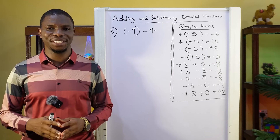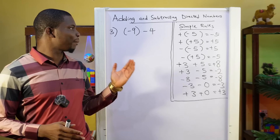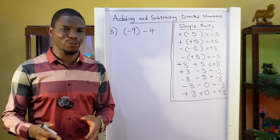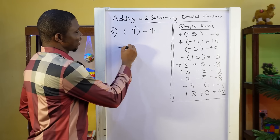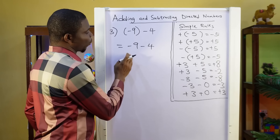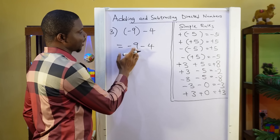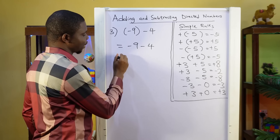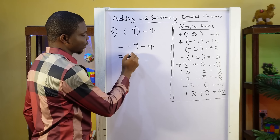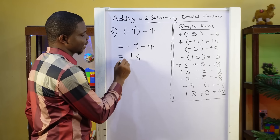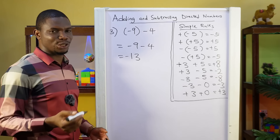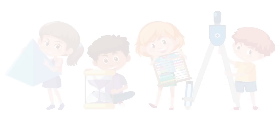Question 3: minus 9 minus 4. Remember, when you have minus minus, you simply add: 9 plus 4 is 13. And then the answer takes a negative, so the answer is minus 13.